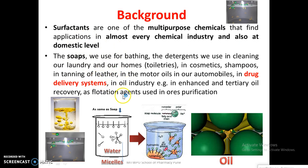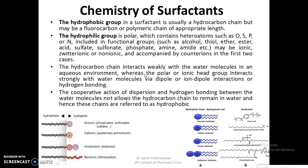Surfactants can be ionic, non-ionic, cationic, or zwitterionic and are widely used in all industries. If you talk about the chemistry of the surfactant, it has two important phases: hydrophobic and hydrophilic group. The hydrophobic group of a surfactant is usually a hydrocarbon chain, but it may be a fluorocarbon or polymeric chain of appropriate length. The hydrophilic group is mostly polar in nature — polar groups have high affinity towards water molecules, which contain heteroatoms such as oxygen, sulfur, phosphorus, and nitrogen — including functional groups such as alcohol, thiol, ether, esters, acids, sulfate, sulfonate, phosphates, amine, and amides. They may be ionic, zwitterionic, or non-ionic, accompanied by counter ions in the first two cases. Non-ionic surfactants have both polar and non-polar phases; cationic have a positive charge; anionic have a negative charge; and zwitterionic have both ions — polar and non-polar ends. They are amphiphilic — that is why they are called amphiphilic in nature.